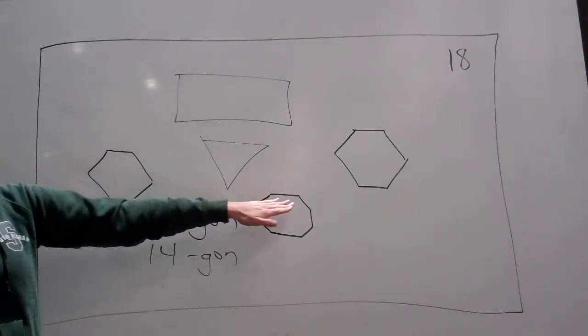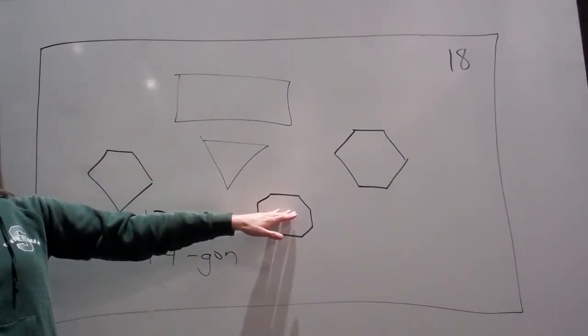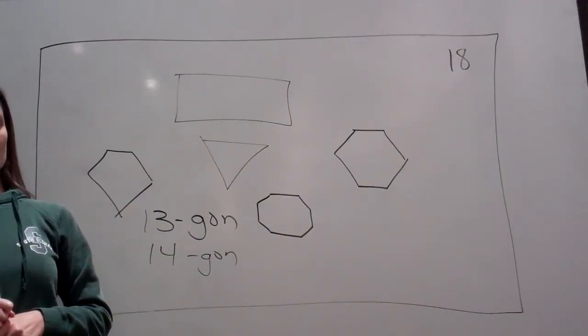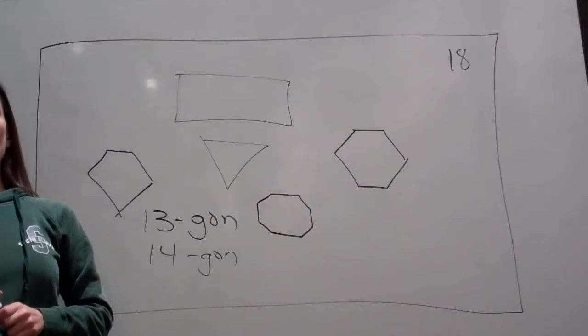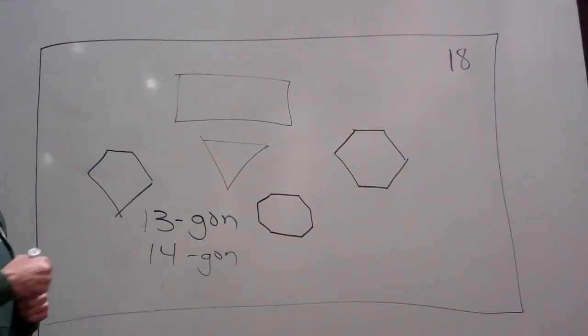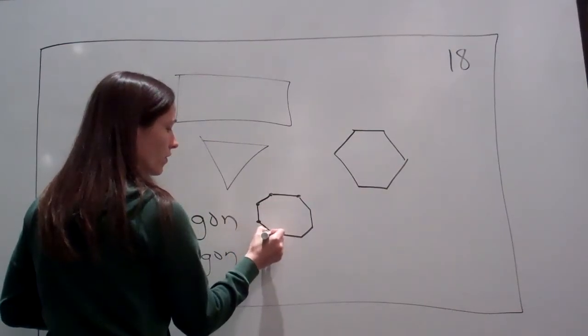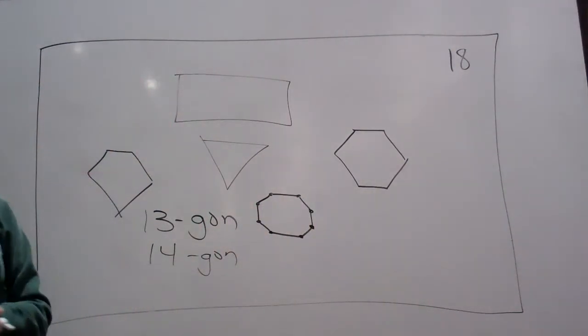So, how many vertexes or vertices does this one have? Eight. The same amount of sides that it has, actually. That's the way it works. One, two, three, four, five, six, seven, eight. Very good. Eight sides, eight vertexes. Very good.